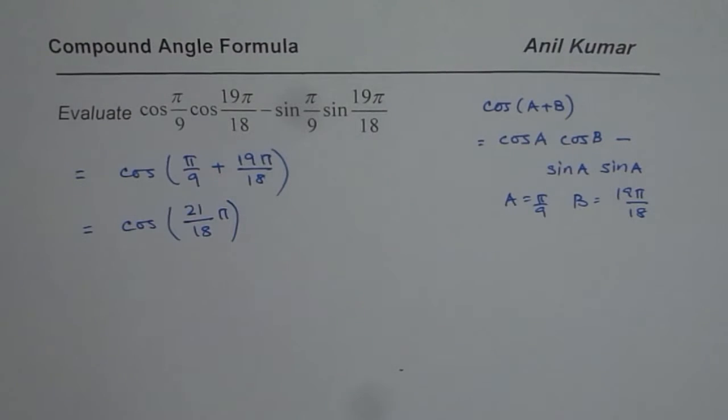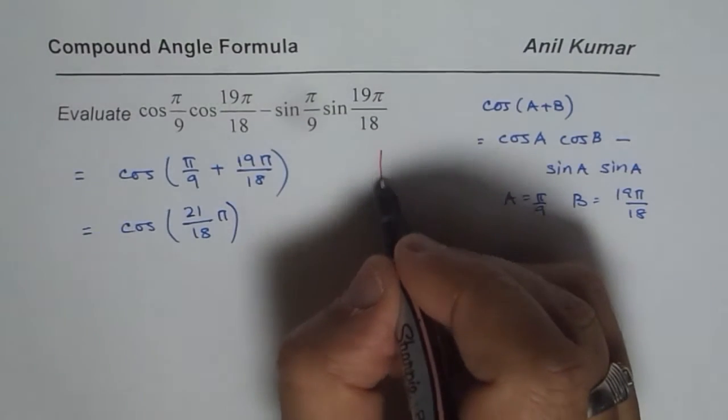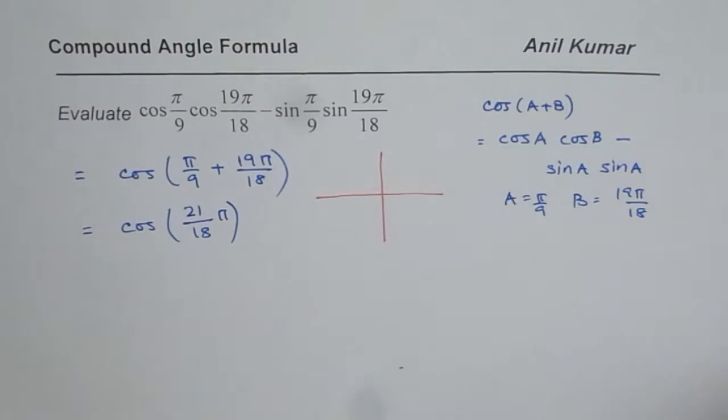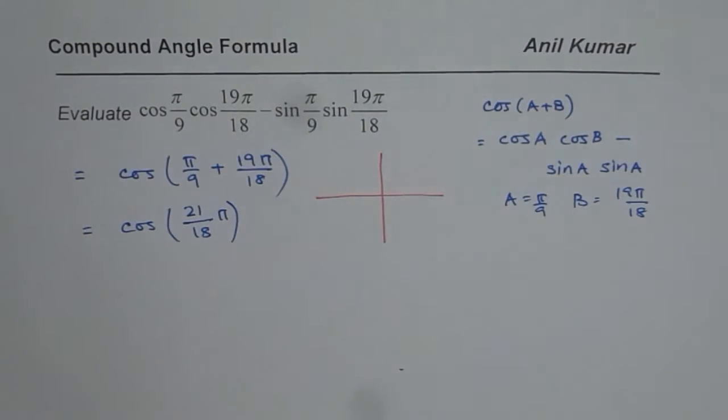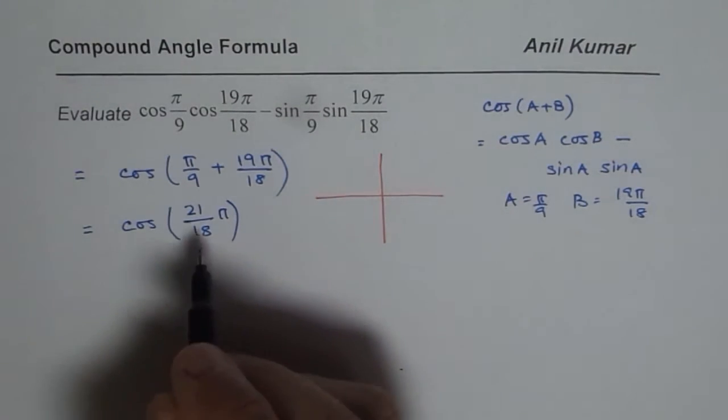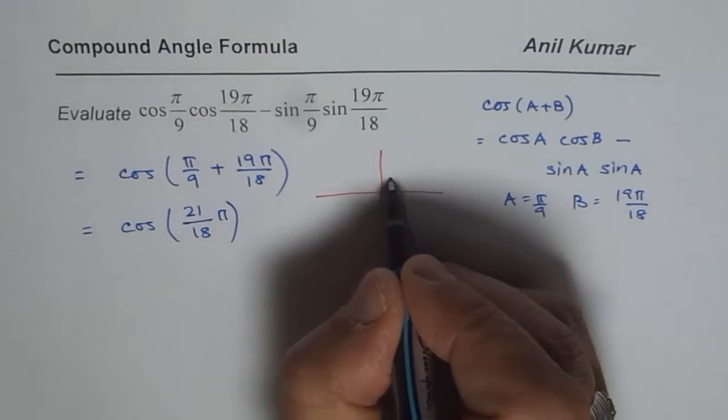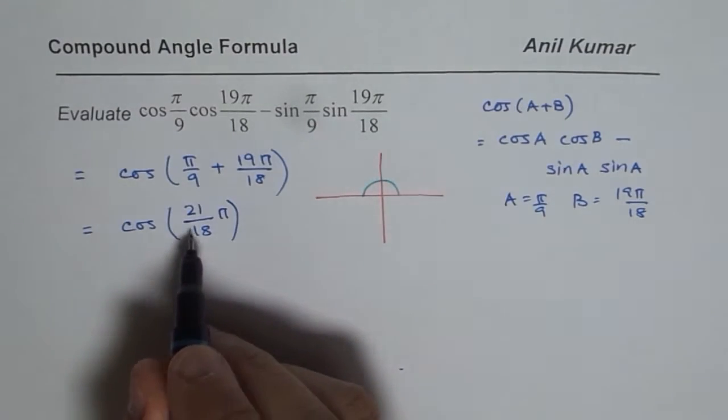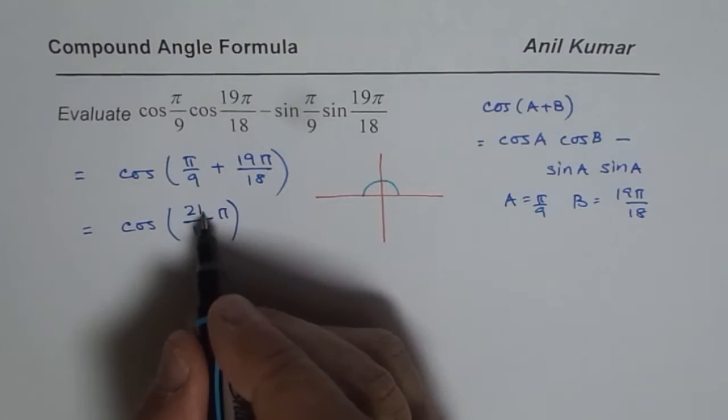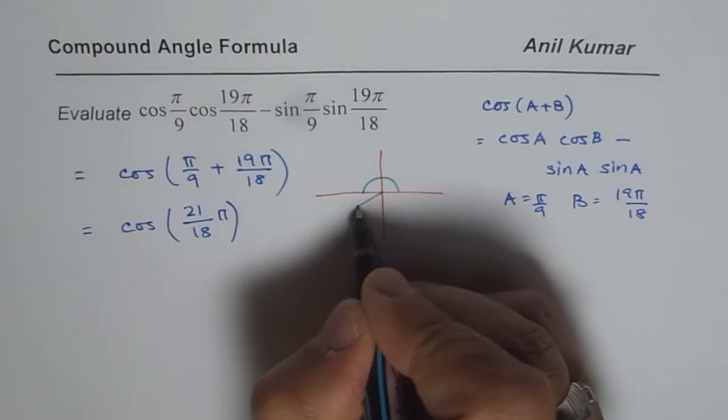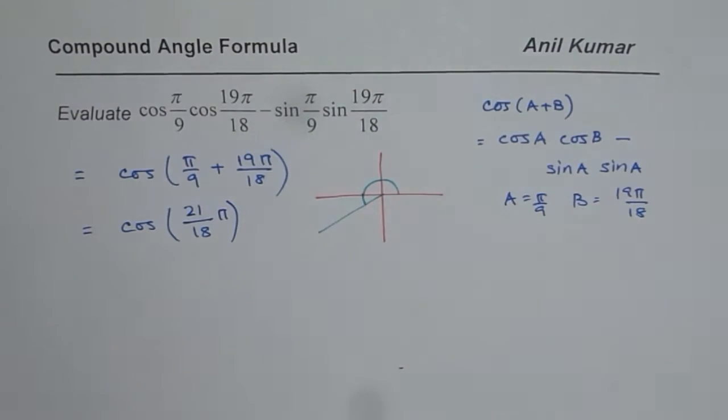Let us look into it. So in a coordinate plane, we have cos of 21 over 18. So π is divided into 18 equal parts. 21 means 3 more. So you are in this coordinate. You are in coordinate 3.